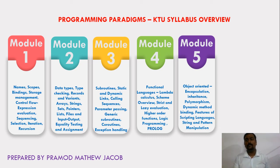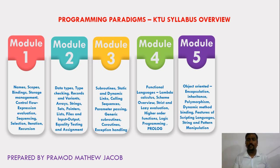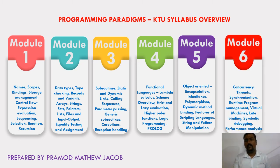In Module 5, we will learn the basic object-oriented concepts and how these concepts are implemented in the backend. We will learn about encapsulation, inheritance, constructors, destructors, polymorphism, dynamic method binding, etc. We will also learn about the features of scripting languages like PHP and Python.